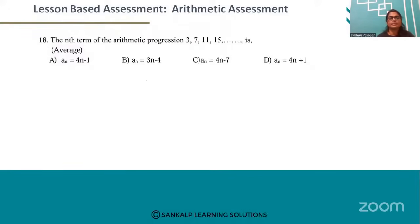formula for AP: a_n is equal to a plus (n minus 1) times d.